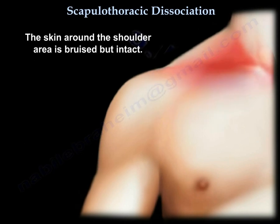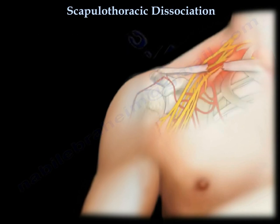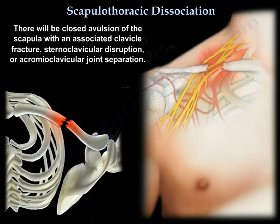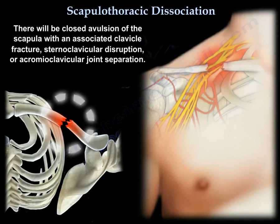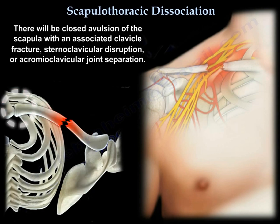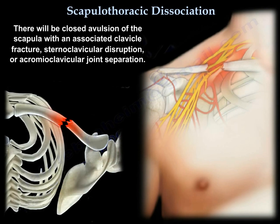The skin around the shoulder area is bruised but intact. There will be closed avulsion of the scapula with an associated clavicle fracture, sternoclavicular disruption, or acromioclavicular joint separation.